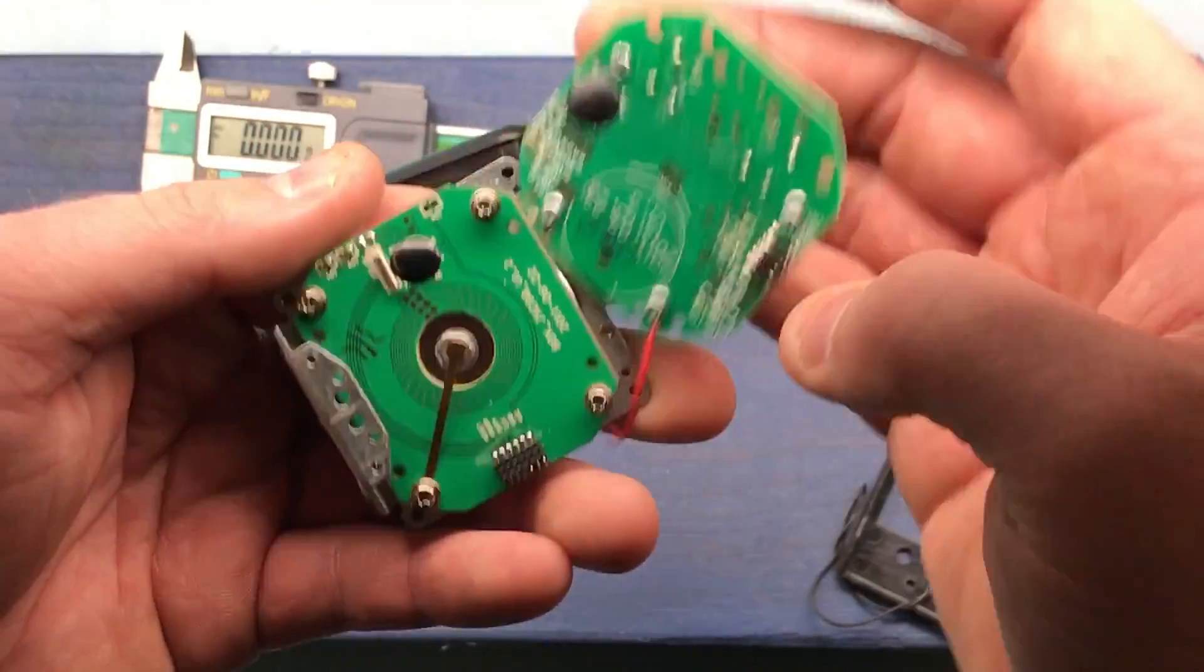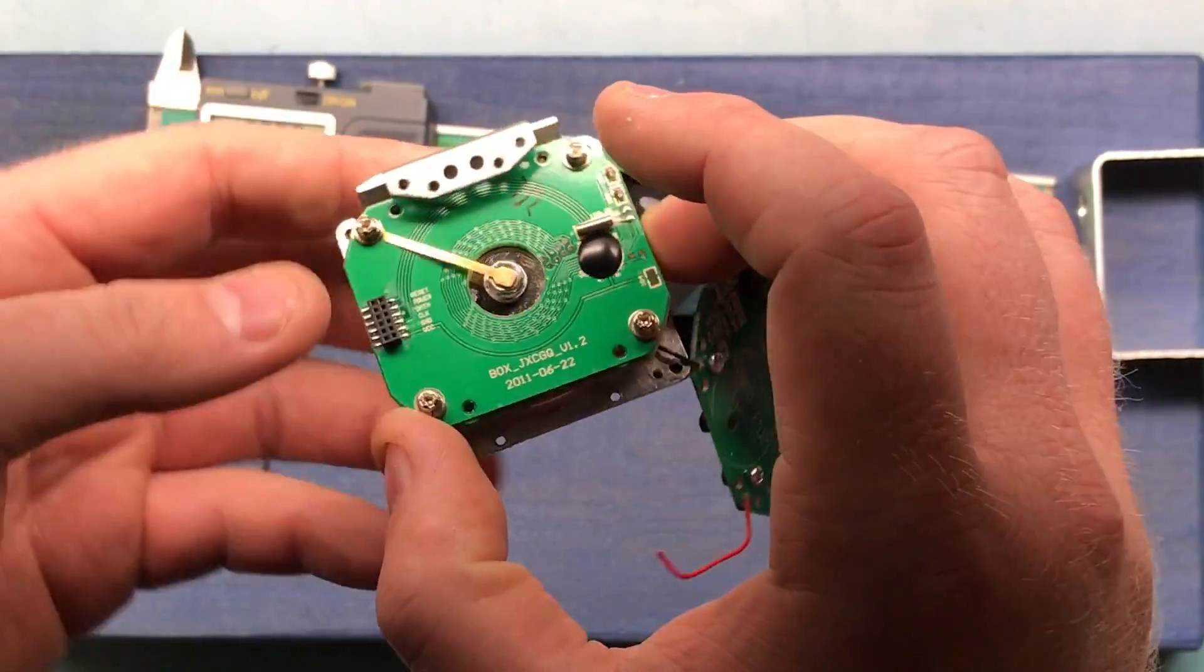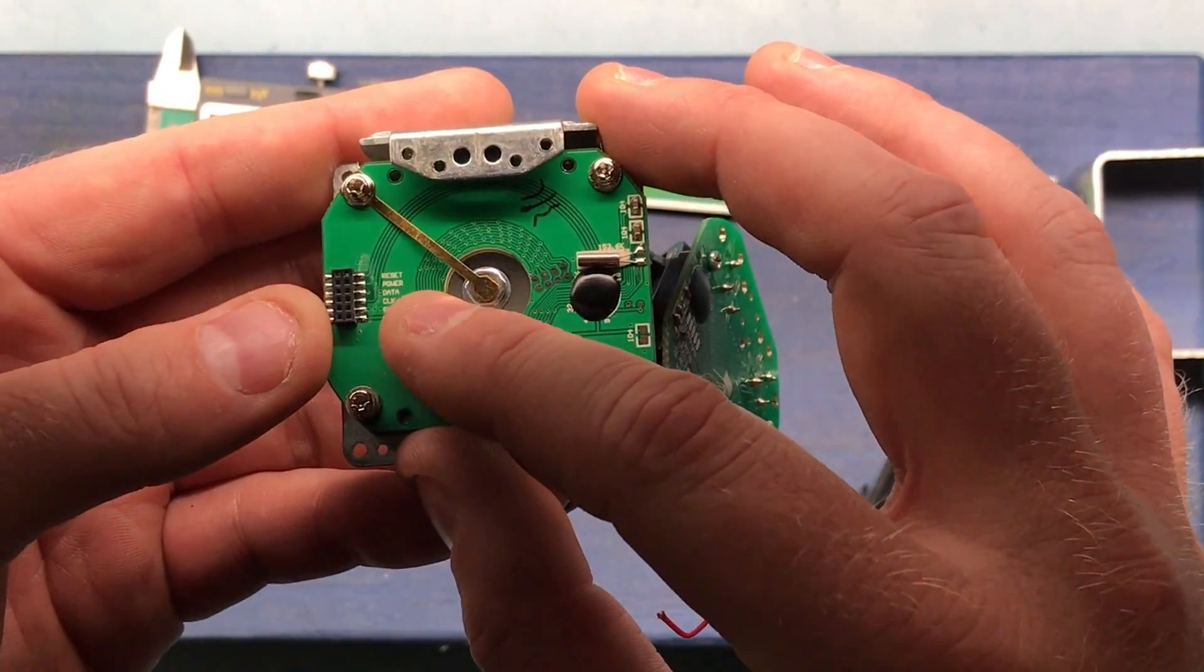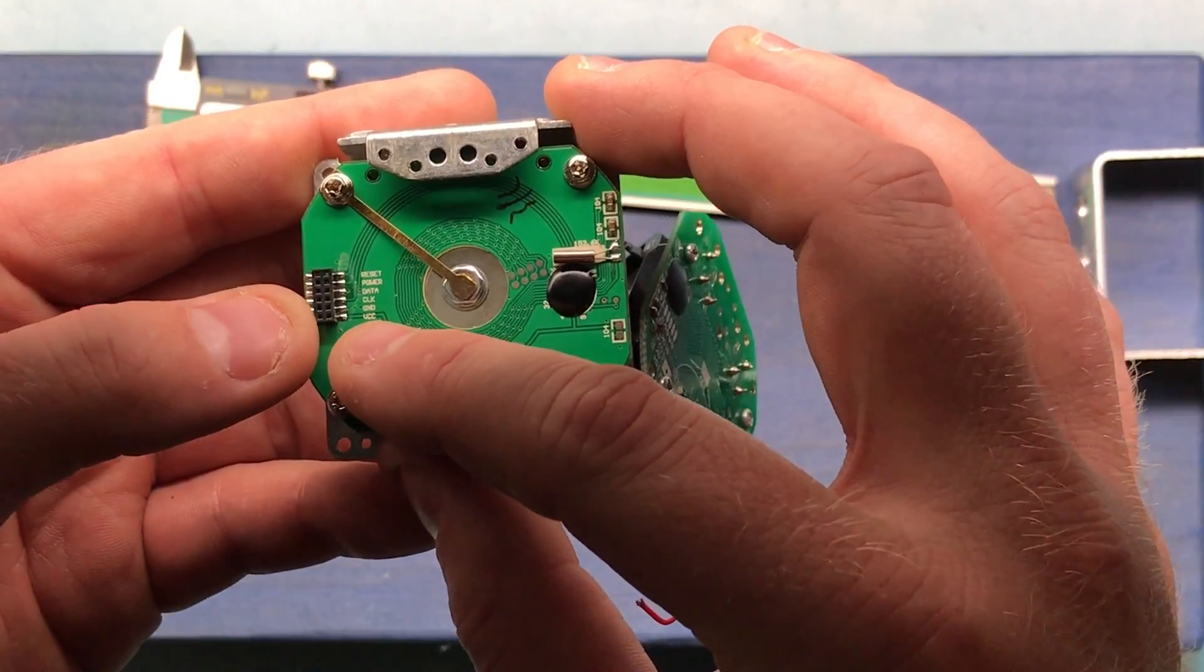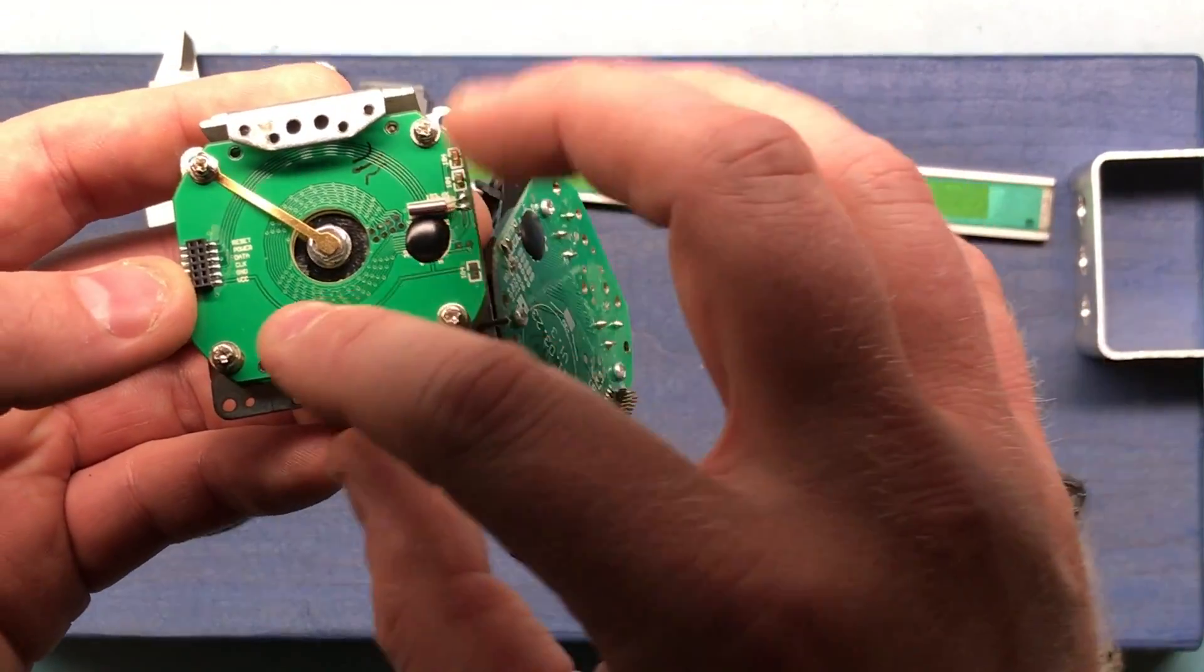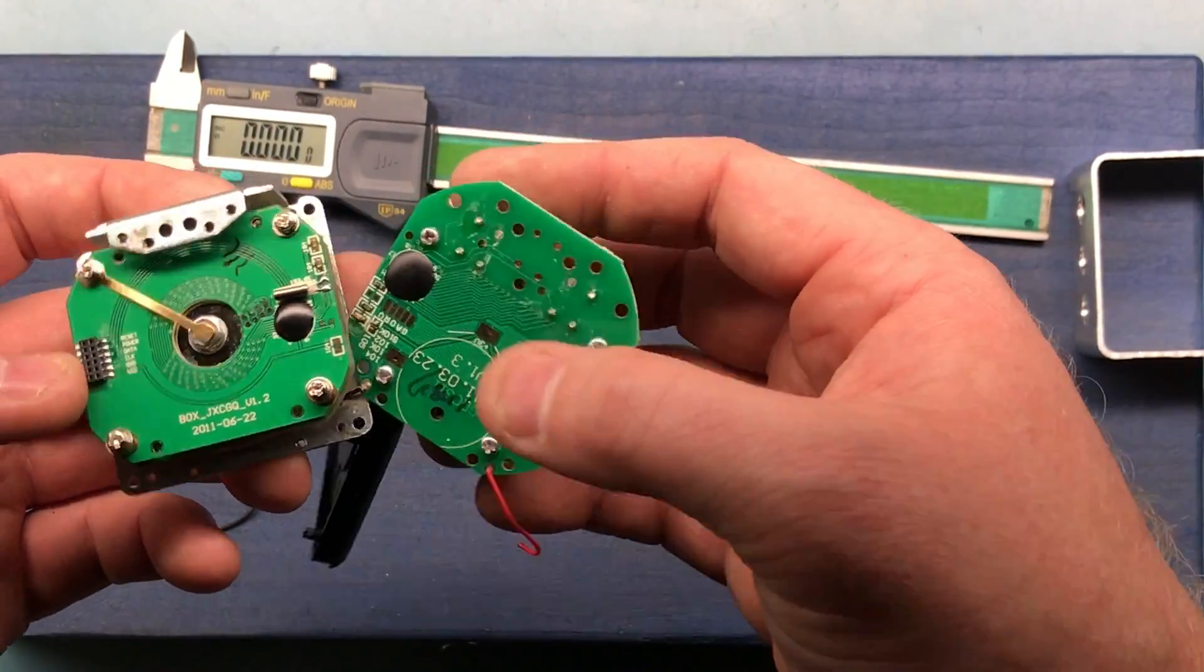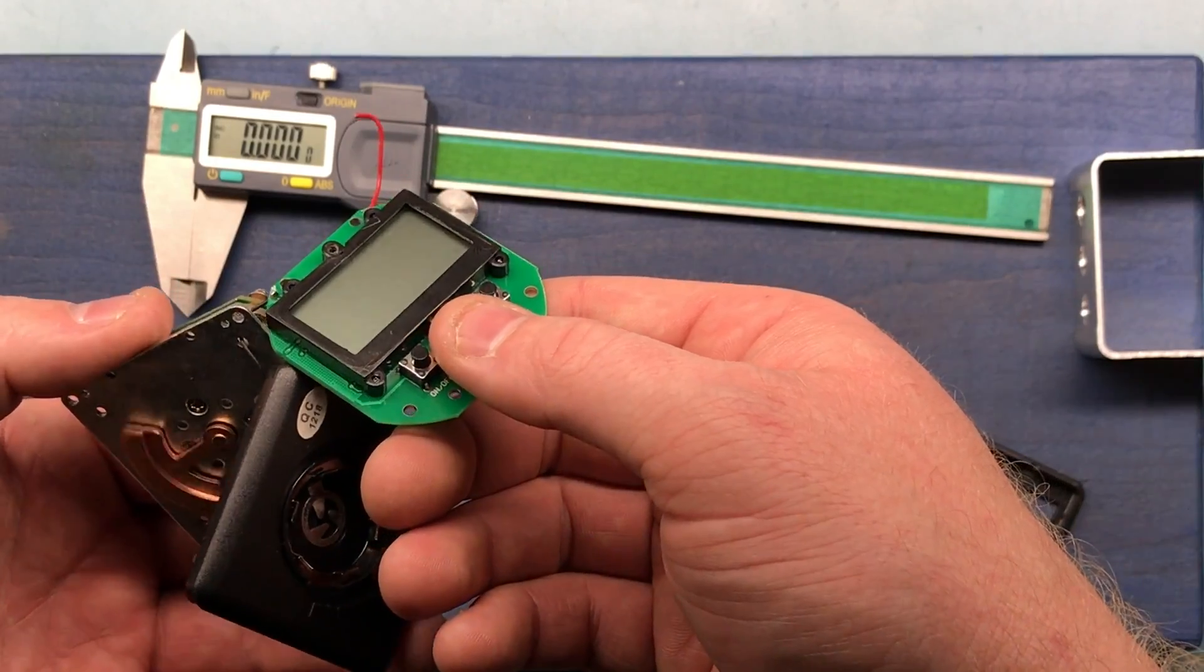Now, if you look, we even have the nice labeling there: reset, power, data, clock, ground, VCC. So if you wanted to tap into this, all you would really need is the clock and data signal, and you could use this for something else if you really wanted to. Okay.